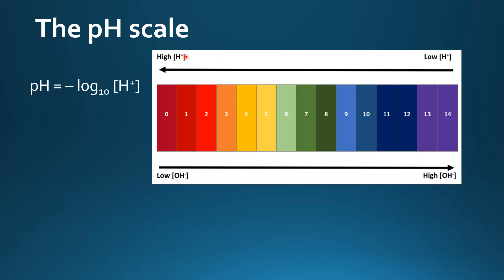If we look in terms of hydrogen ion concentration, acids have high concentration of hydrogen ions, whereas bases have low concentrations of hydrogen ions.